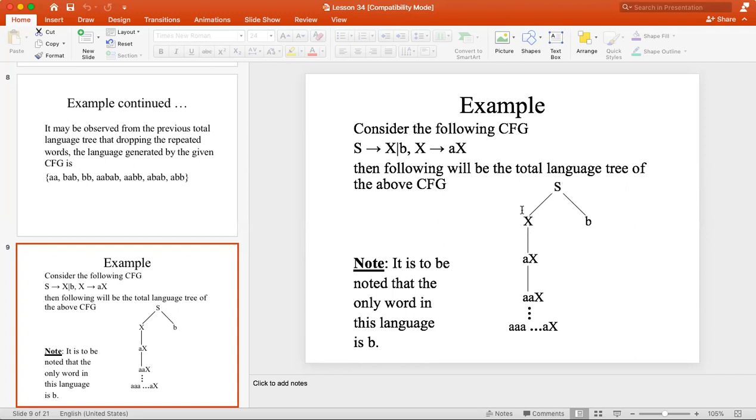Now if you replace X, what is the production of X? X can be AX. This is the production of AX. Now if you replace X from AX, X can be AX. We will replace X to AX.